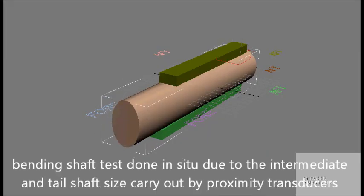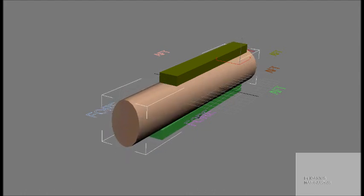Bending shaft test done in-situ for intermediate and tail shaft is carried out by proximity transducers.